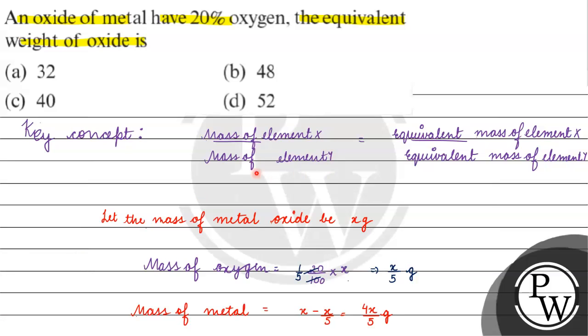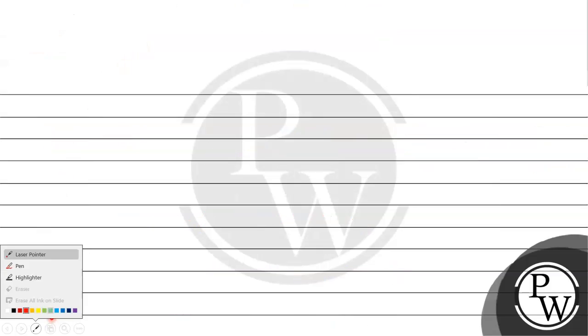Now we know mass of oxygen, mass of metal, we know equivalent mass of oxygen. Let us make the equivalent mass of metal, and both of them, equivalent mass of oxygen, and equivalent weight of the oxide.